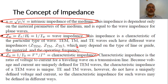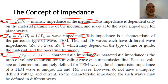The wave impedance depends on the type of the line or guide, in addition to the material inside the waveguide and the operating frequency. So the wave impedance of the guiding structure depends on the type of mode, the geometry of the waveguide, and the dielectric medium of the waveguide.